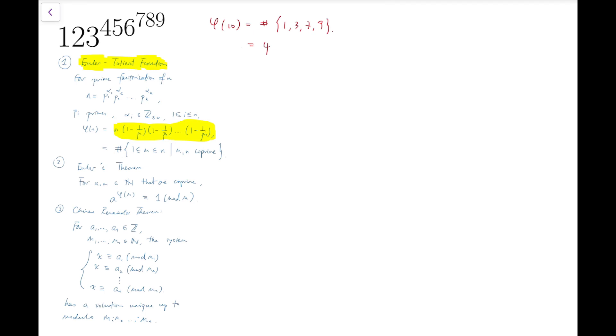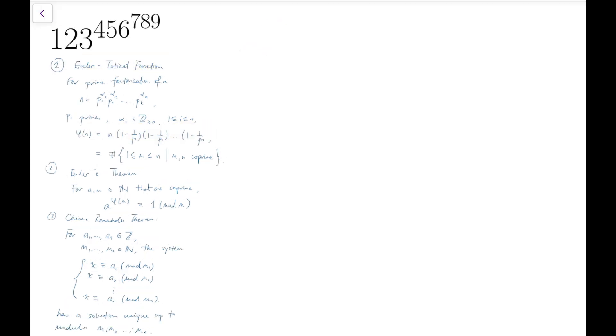The third tool is the Chinese Remainder Theorem, which helps us to compute congruences when the number we are dividing by is a very large number, and we are going to demonstrate how to use that later.